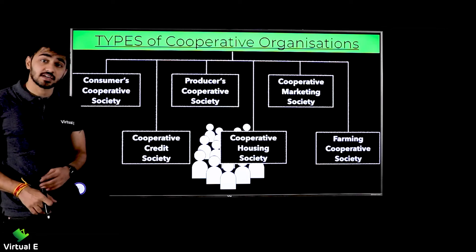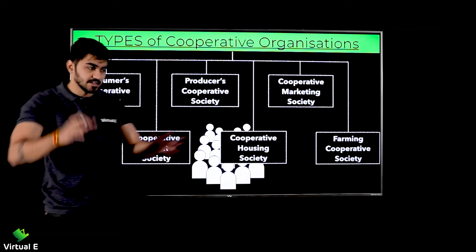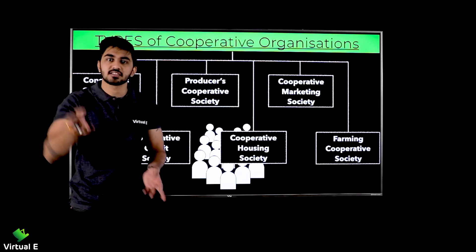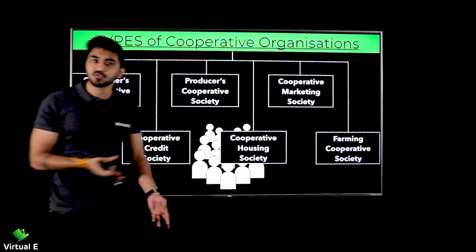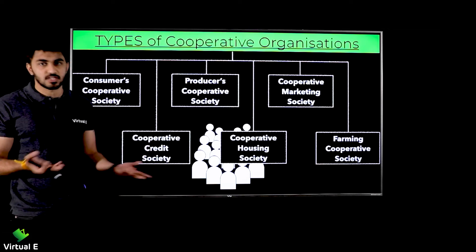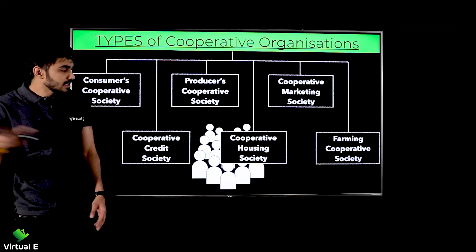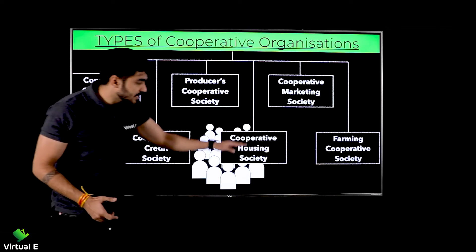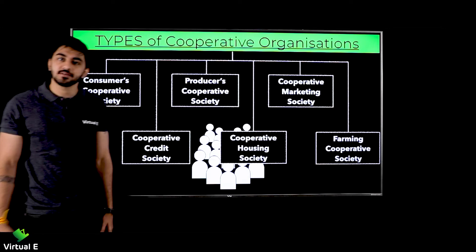You might ask: sir, how will this society earn profit? The answer is simple — interest will come in from the loans given out. The person who takes the loan pays interest, and that is the profit. Simple. Next is the cooperative housing society.